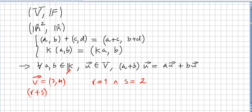Let us see what is (r+s) times V. That will be (1+2) times the vector (3,4). So that will be 3 times (3,4), which equals (9,4), because the operation is defined this way.